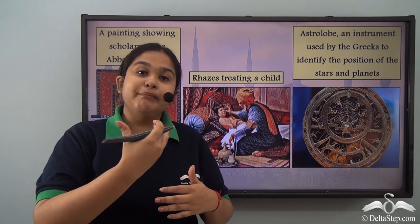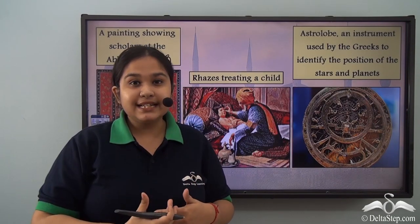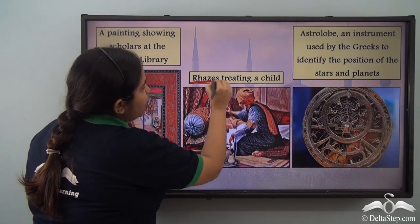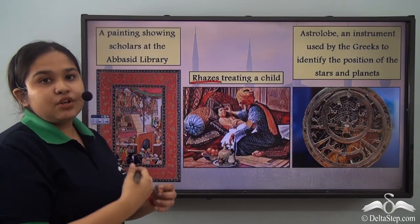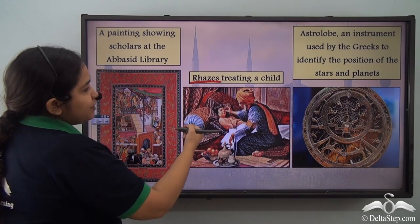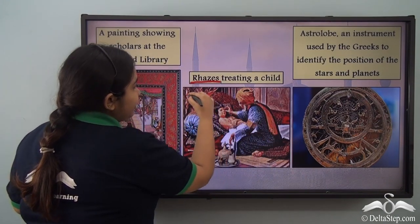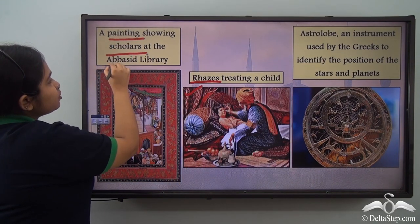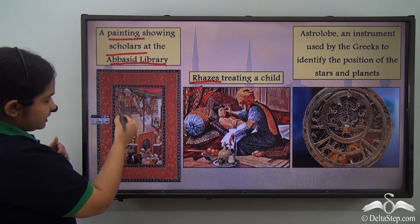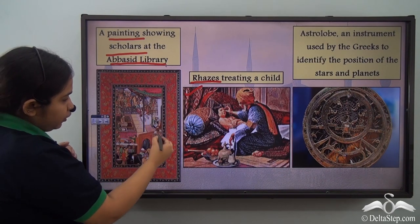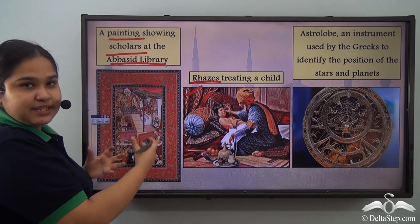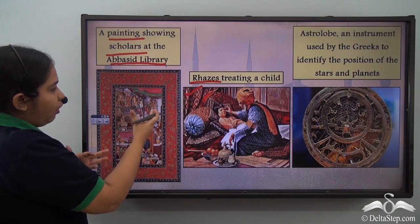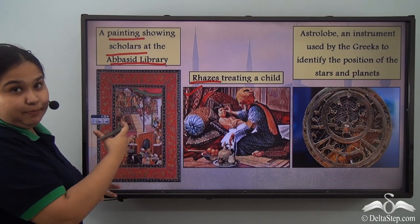Here we can see Rhazes, a physician, treating a child, and in this painting we see scholars of the Abbasid library — all of these people in a court-like structure that is the House of Wisdom. This was the library where all kinds of study would take place.